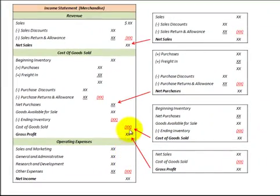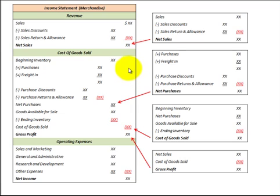So this is just an overview of an income statement for a merchandising company — a company that's selling goods — and it gives you a guideline and reference of what that income statement looks like.